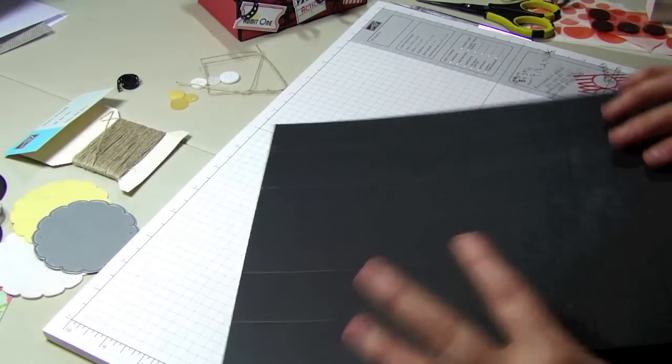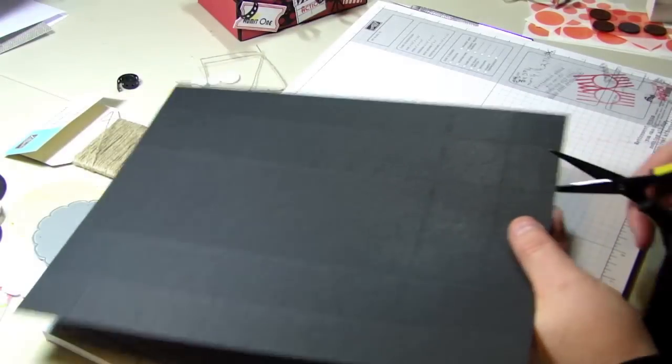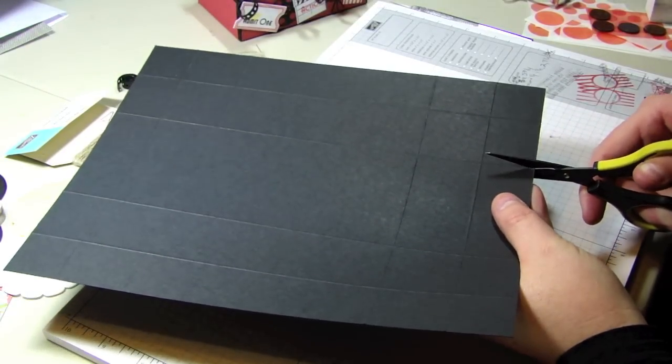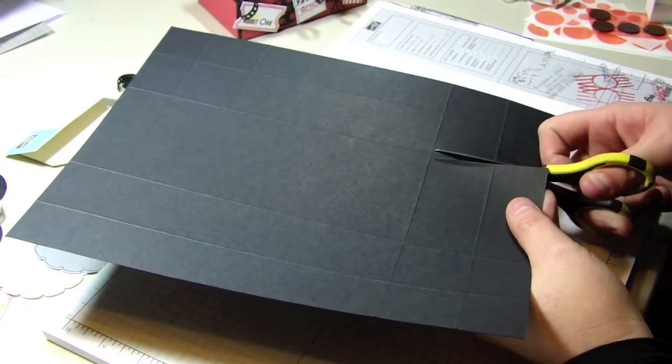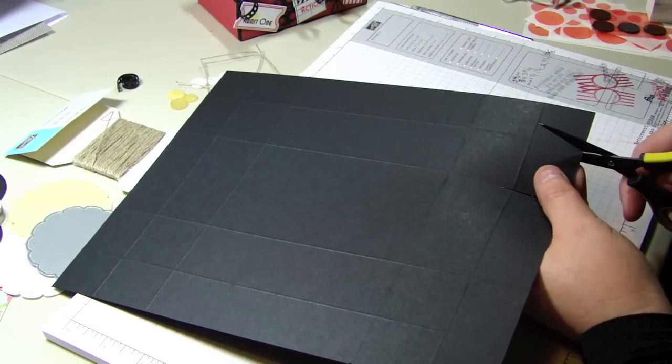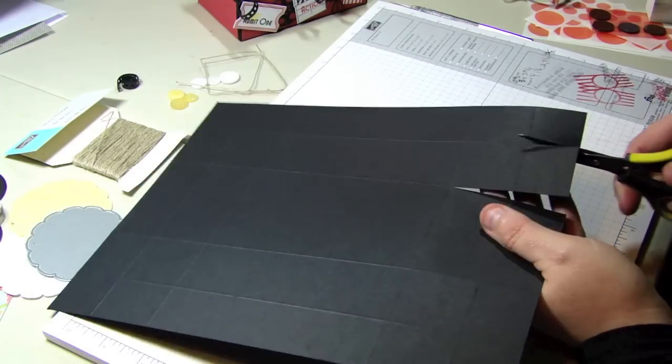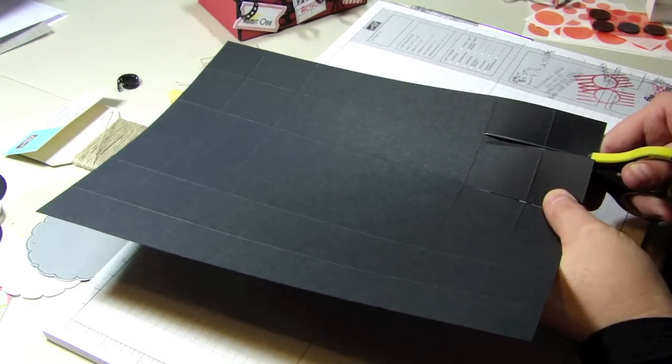The next step is going to be to cut along some of the score lines so that we can assemble the box. You can kind of see them in the shot here. I'm going to cut along each of the score lines on opposing sides all the way up until that top score line. So you'll need to make four cuts on each side. You'll see here I'm cutting the second one.